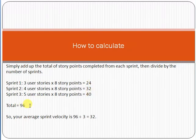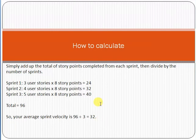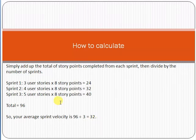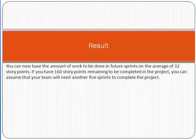So 24 plus 32 plus 40 equals 96 total story points. The average sprint velocity is 96 divided by 3 sprints, which equals 32. So 32 is the sprint velocity of this team. In each sprint we calculated how many story points were completed, added them all up, and divided by the number of sprints to get the sprint velocity.